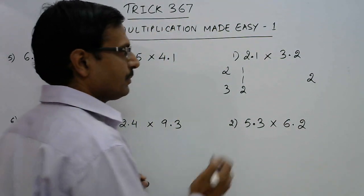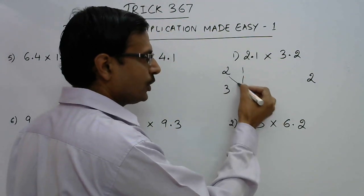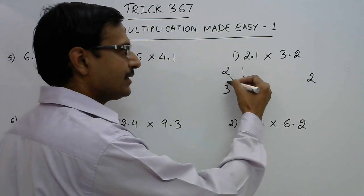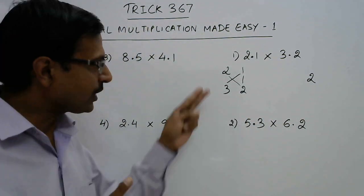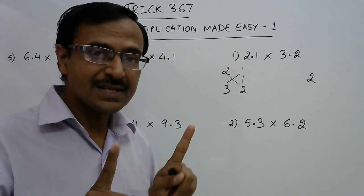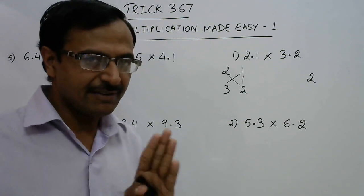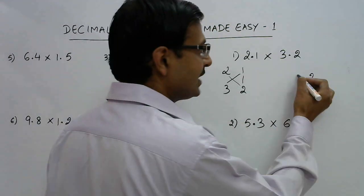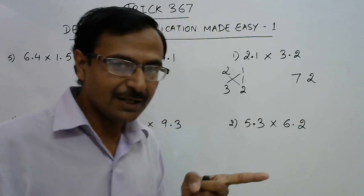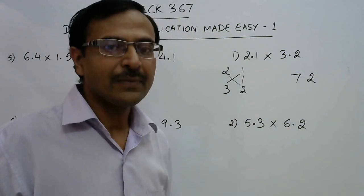Then in the second step you have to cross multiply like 2 into 2 is 4 and 3 into 1 is 3. So you have two products there, 4 and 3. Just add the 2, you get 7. So again a single digit number so write 7. If there is a carry number then you have to carry it forward to the next step.